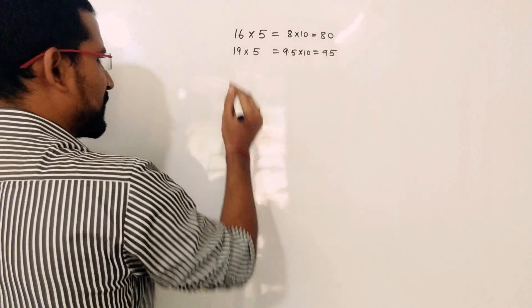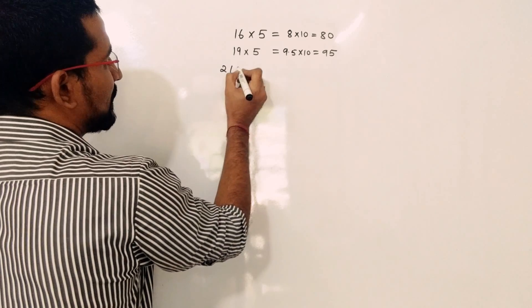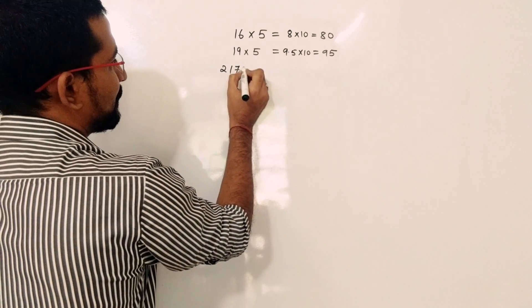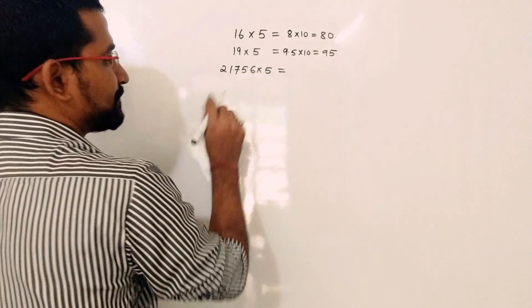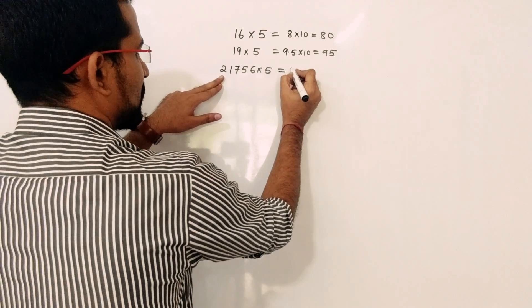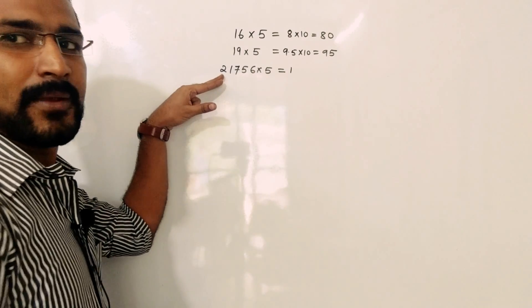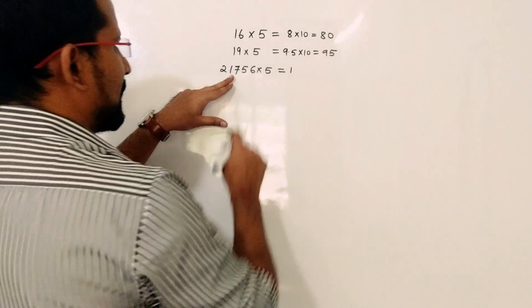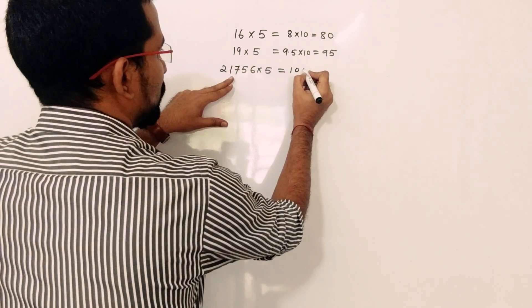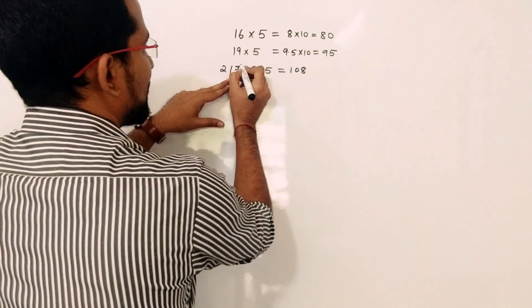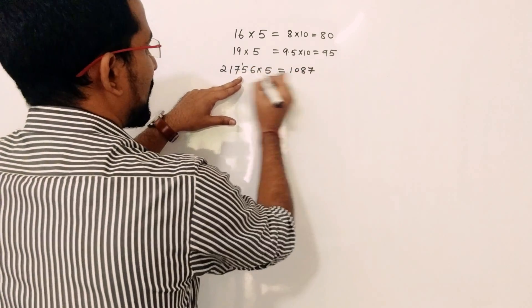We will take higher values. For example, you want to multiply 21,756 by 5. So again this number will be divided by 2. Starting the division: 2 into 1 gives 0 remainder 1, carry it; 2 into 8 is 16, carry 1; 2 into 7 is 14, carry 1.